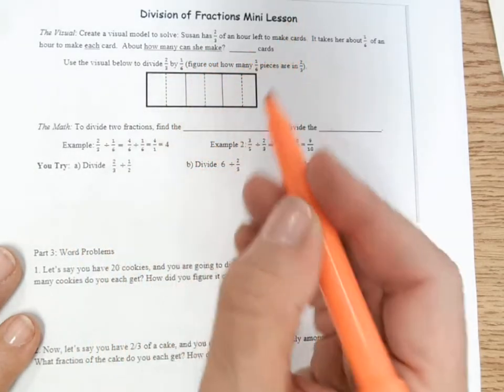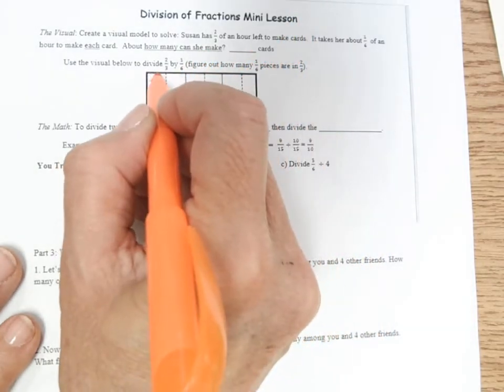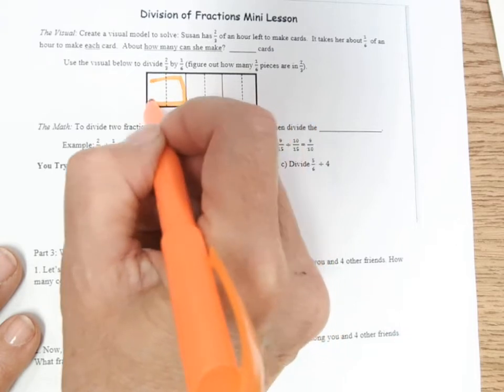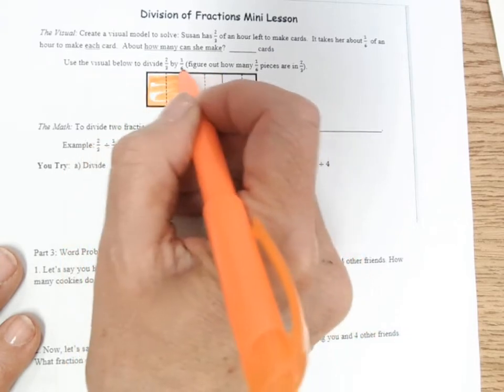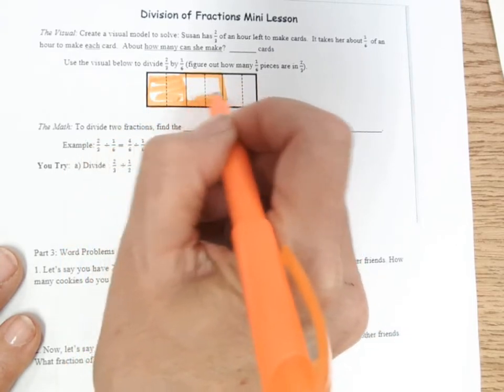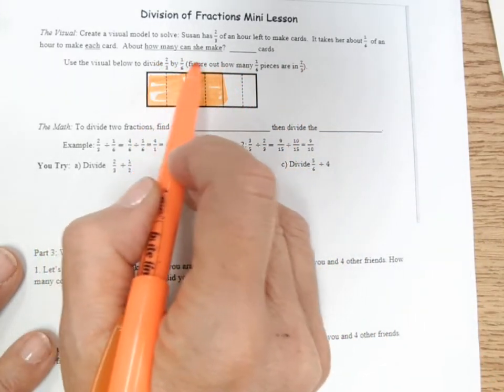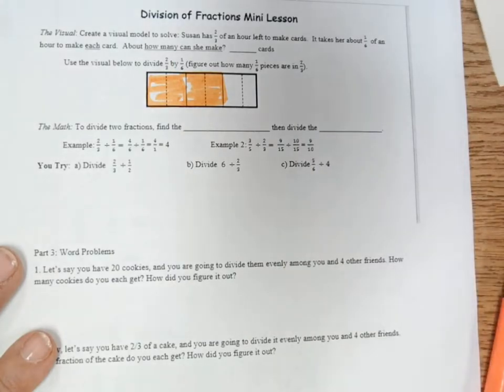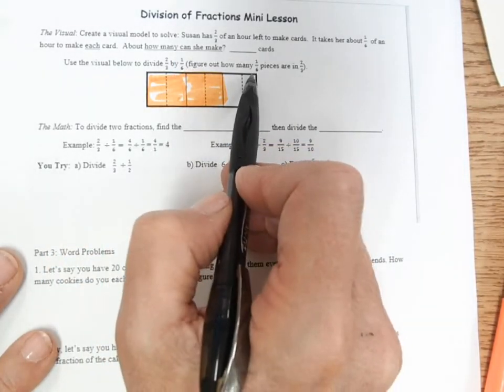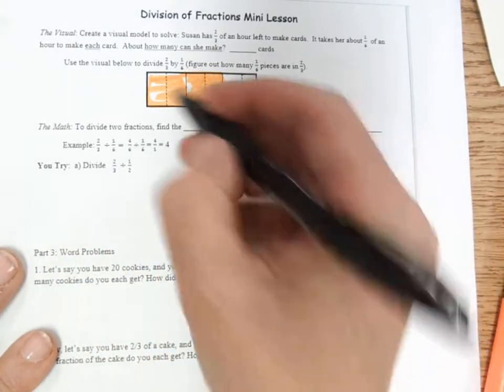So we're trying to figure out how many cards she can make. So here is one-third of an hour, and here is another third of an hour. So that represents two-thirds of the hour. And we're being asked to divide two-thirds by one-sixth. So that question means how many one-sixth pieces are there in two-thirds?